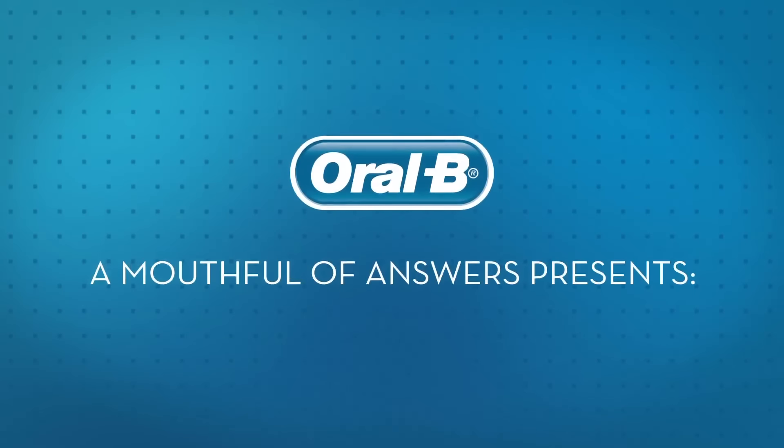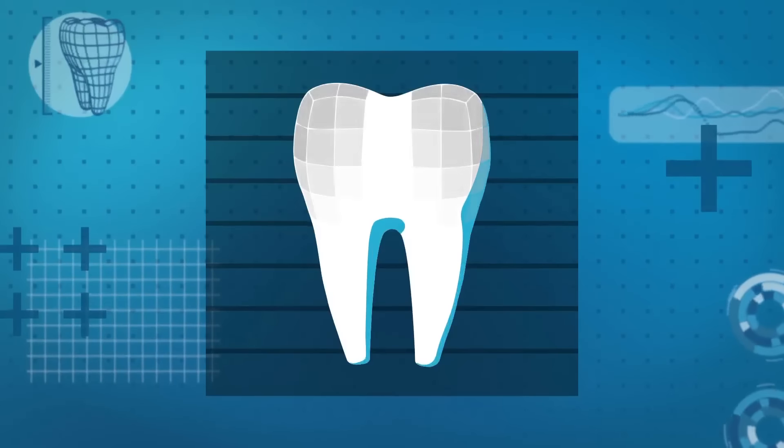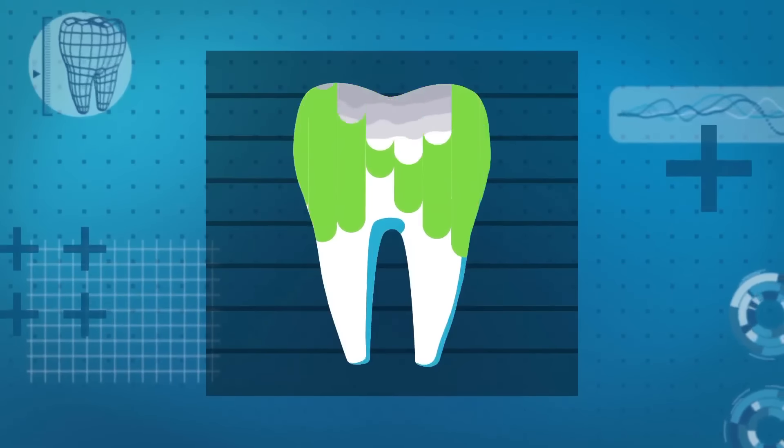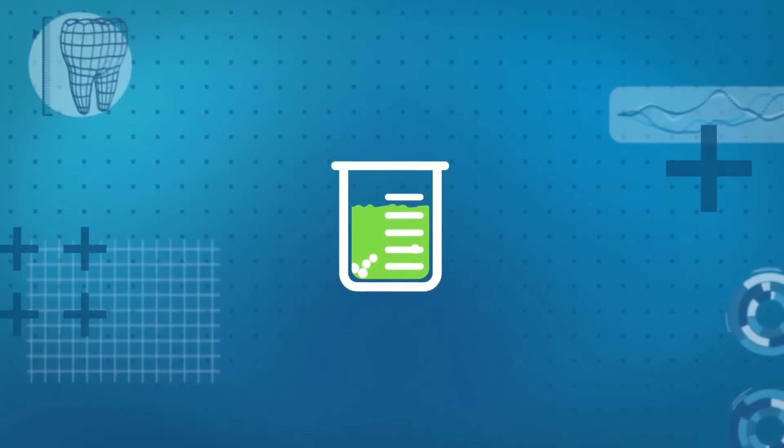Oral-B A Mouthful of Answers presents What Causes Cavities? Tooth decay is the softening of your tooth enamel caused by acids. These acids are created by plaque bacteria breaking down sugar from carbohydrates you eat.